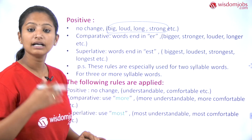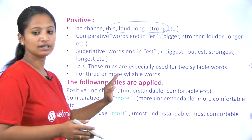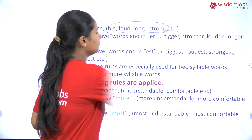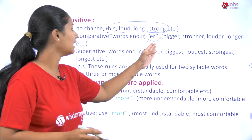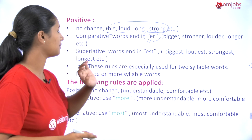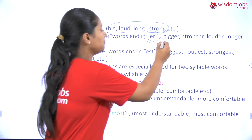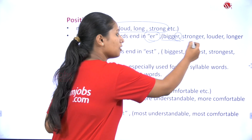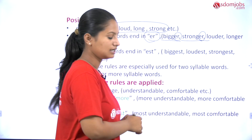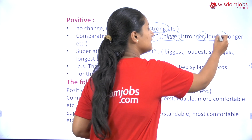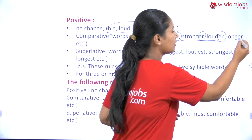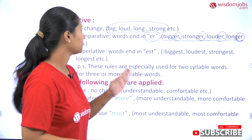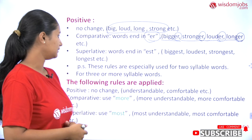In comparative degree, words end with '-er'. For example: bigger, where '-er' is joined; stronger, where '-er' is joined; louder, where '-er' is joined; and longer, where '-er' is joined. These are four examples of the comparative degree.